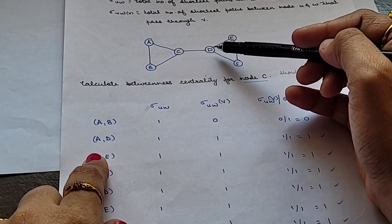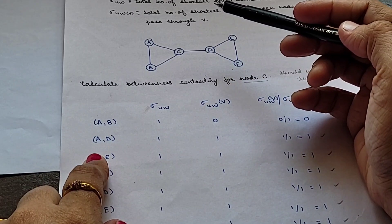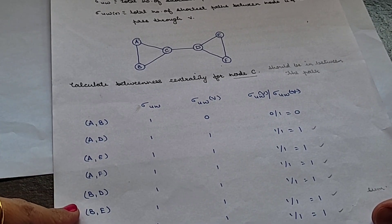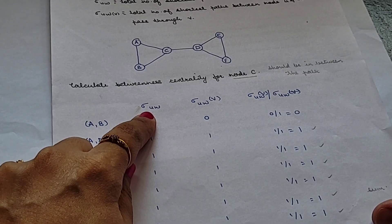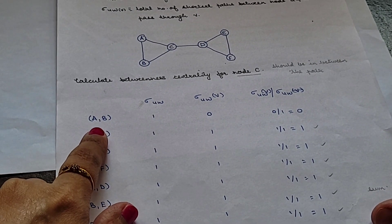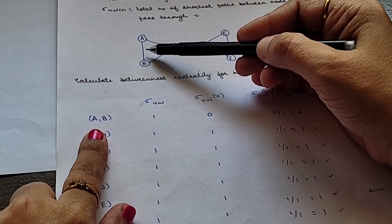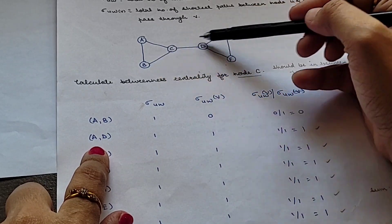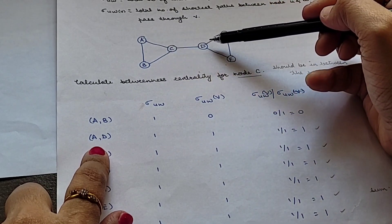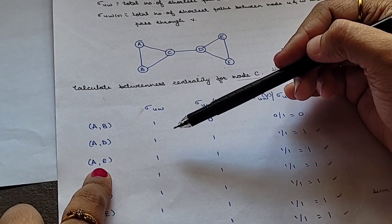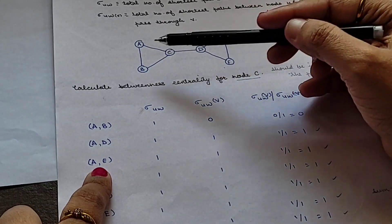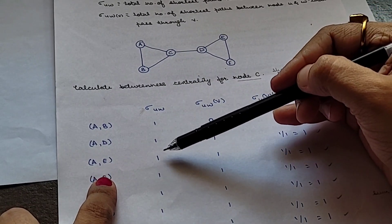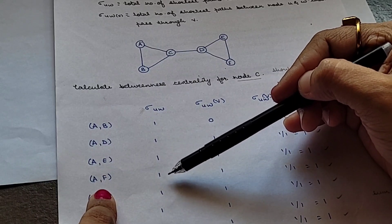For A to D, you have two paths: A-C-D and A-B-C-D, but the shortest path count is 1. For A to E, you can traverse A-C-D-E or A-B-C-D-E; the shortest path is A-C-D-E, so that is a single shortest path — write 1. For A to F, you also have a single shortest path, so write 1. In this way, you write down the number of shortest paths for each pair.